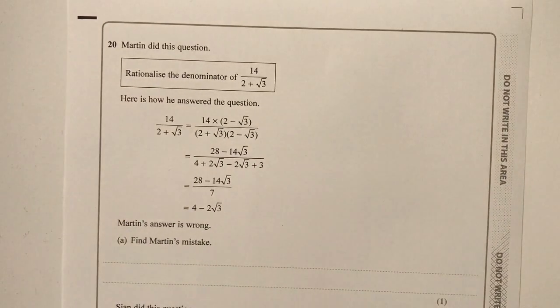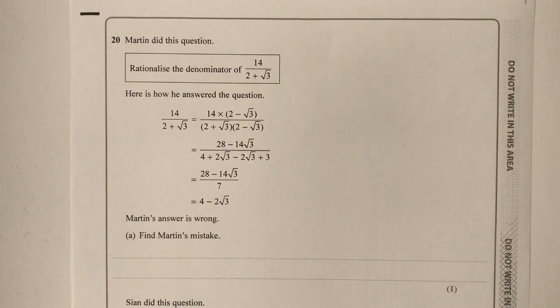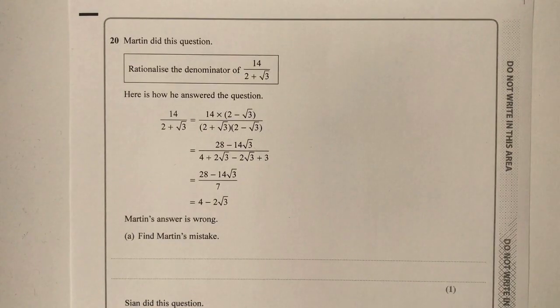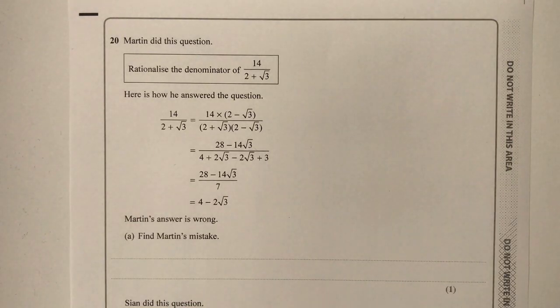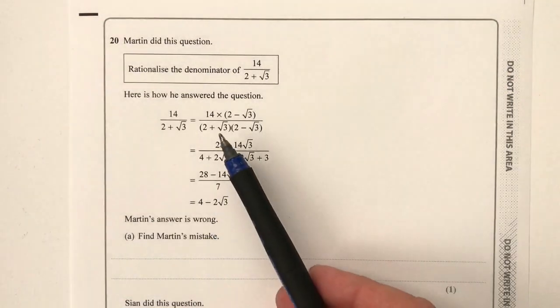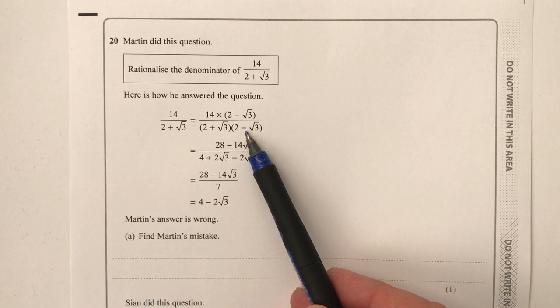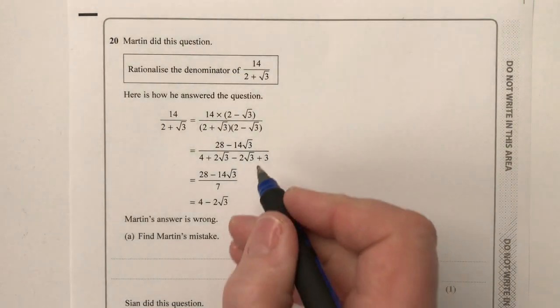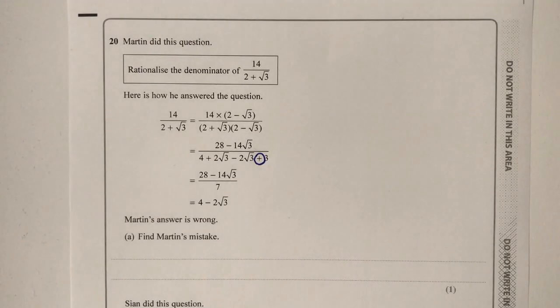Let's move on to question 20, where we're going to rationalize the denominator. There is a playlist on the site, please do have a look. These types of questions are becoming more popular in past papers. We've got to find the bit that's wrong. The mistake is that plus root 3 times minus root 3 gives minus root 9, which is minus 3 — and it's that part that's wrong.